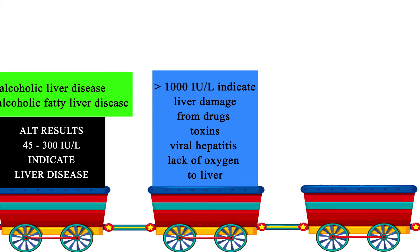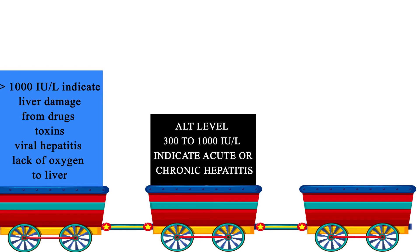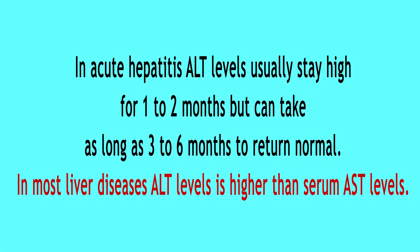Levels above 1000 international units per liter indicate liver damage from drugs, toxins, viral hepatitis, or lack of oxygen to the liver due to a heart attack. Moderately high ALT levels between 300 to 1000 international units per liter indicate acute or chronic hepatitis. In acute hepatitis, ALT levels usually stay high for one to two months, but can take as long as three to six months to return to normal.